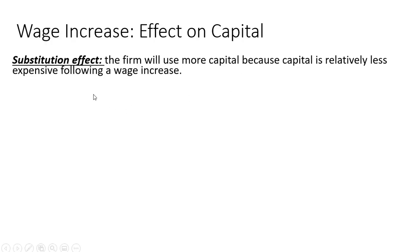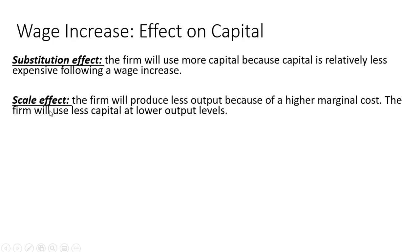Now let's look at a wage increase and its effect on capital. Once again, we have a substitution effect: the firm will use more capital because capital is relatively less expensive following a wage increase. There will also be a scale effect: the firm will produce less output because of a higher marginal cost. So when wages go up, marginal costs rise, and the firm will produce less output. At lower output levels, the firm simply does not need to use as many inputs, so the firm will use less capital at lower output levels.